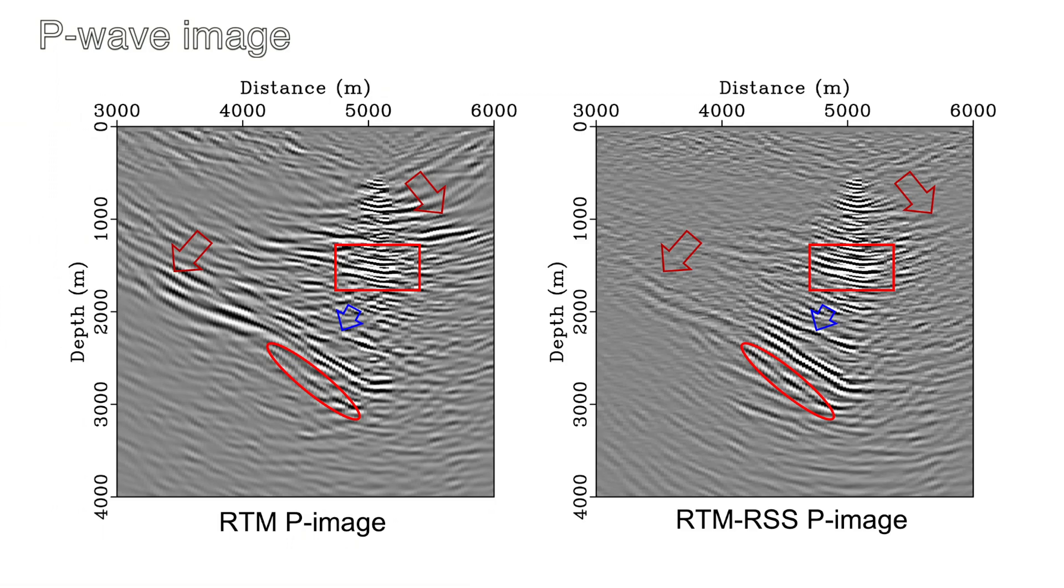RSSRTM partially mitigates this problem by stacking the extended migration image along the subsurface offset axis within a half-wavelength range. The spatial shift at each time step is randomly assigned in order to reduce the computation cost. We implemented both conventional RTM and RSSRTM. It is obvious that the RSSRTM image appears to be more continuous and the migration smiles are effectively reduced. Combining the efforts of both careful wave field separations and the RSSRTM, we hope to provide a better subsurface image for interpretation.